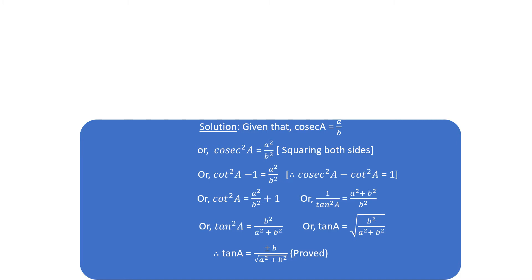Or cos² α equals 1 by tan² α, and the right side equals a² plus b² by b². Therefore tan² α equals b² by a² plus b². Reversing both parts, tan α equals root over b² by a² plus b², which gives tan α equals plus minus b by root over a² plus b². Proved.